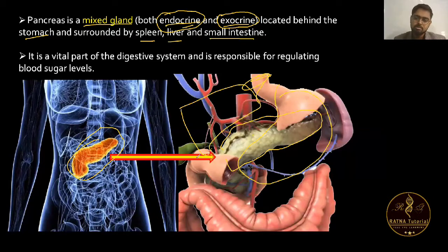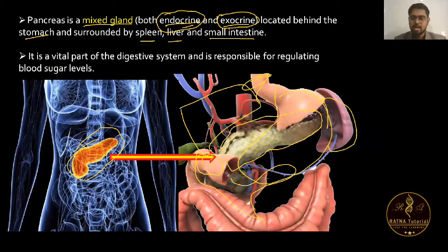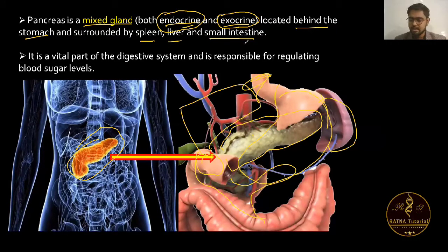This other way is the small intestine, and here is the jejunum. This side leads to the spleen. So pancreas is present behind the stomach and surrounded by spleen, liver, and small intestine.